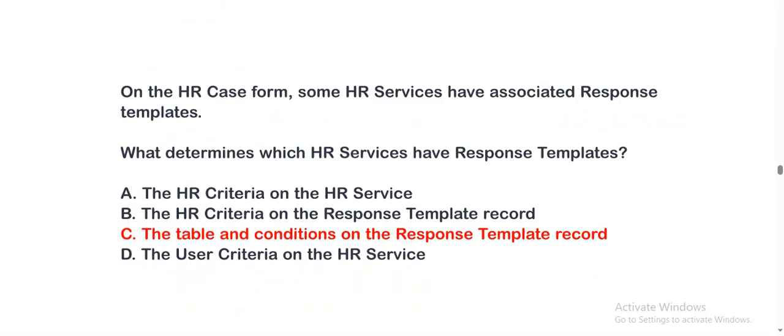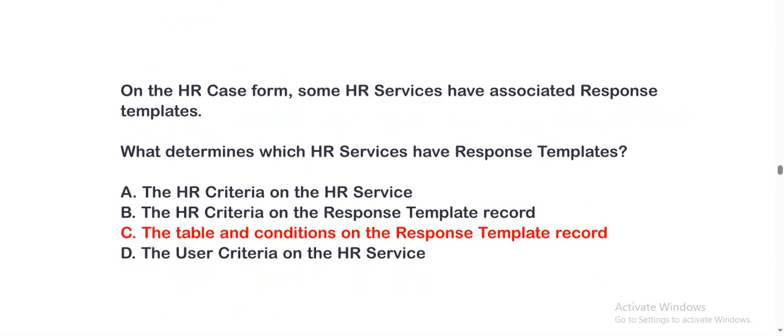On the HR case form, some HR services have associated response templates. What determines which HR services have response templates? Option A: the HR criteria on the HR service. Option B: the HR criteria on the response template record. Option C: the table and conditions on the response template record. Option D: the user criteria on the HR service. The correct option is C.